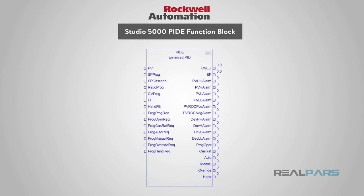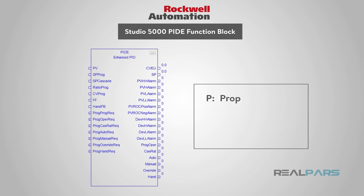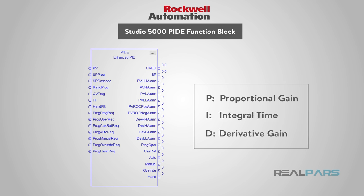In case you may have forgotten what PID stands for: the P stands for proportional gain, I for integral time, and D for derivative gain. PID and PIDE are used for process control, which includes the automatic control of systems such as temperature, flow rate, pressure, and speed.